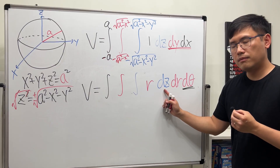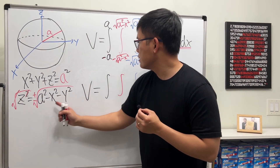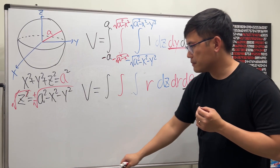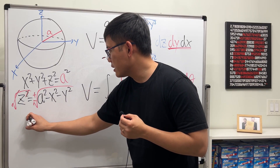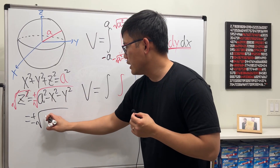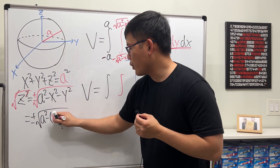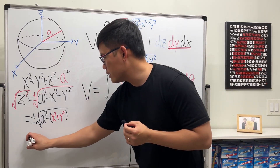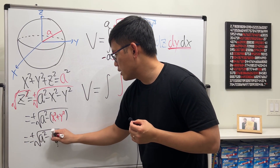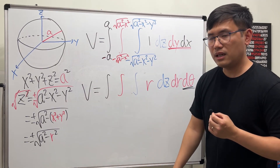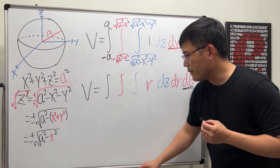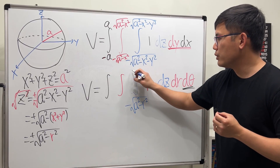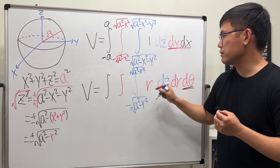For the dz limits — be careful now. Notice we can factor out a negative, and this gives us plus or minus the square root of a squared minus (x squared plus y squared). In the polar world, x squared plus y squared equals r squared. So in the cylindrical system, z goes from negative square root of (a squared minus r squared) up to positive square root of (a squared minus r squared).